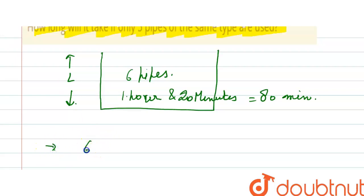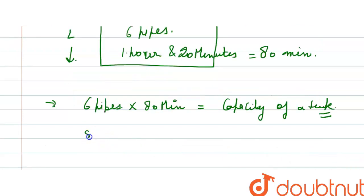So 6 pipes multiplied with 80 minutes is equal to the capacity of the tank. Capacity of a tank and 5 pipes multiplied by x minutes, that is equal to also capacity of the tank.